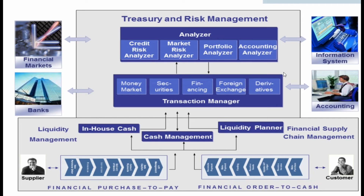SAP Treasury and Risk Management is an integrated solution. There is in-house cash, cash management, and liquidity planner. Treasury and Risk Management is linked with financial purchase-to-pay and financial order-to-cash — the O2C and P2P processes are linked to cash management, all interlinked. Treasury and Risk Management also continuously has interaction with the financial markets, banks, information systems, and accounts — essentially sitting between supplier and customer.